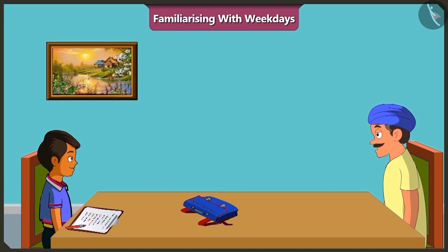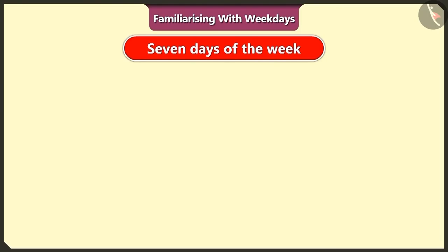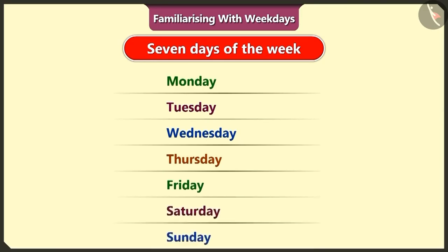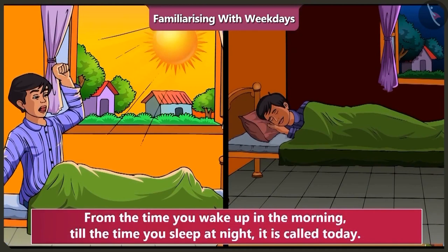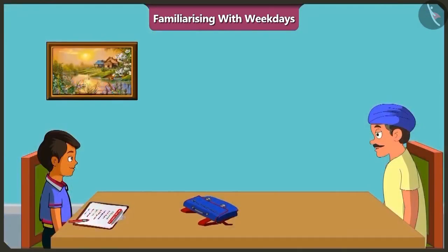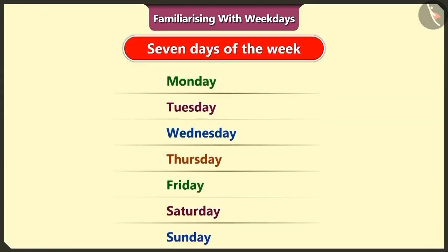I didn't understand. First of all, write the days of the week on a piece of paper. I wrote down the names of the seven days of the week. Now, tell me, what day is today? From the time we wake up in the morning till the time we sleep at night is called today. So, which day of the week is today? Today is the first day of the week — Monday. We will circle Monday and write today next to it.